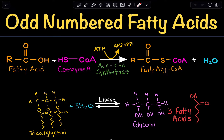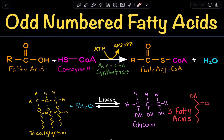Here we're going to go over odd-numbered fatty acid beta-oxidation. Beta-oxidation is the process in which we break down a fatty acid — essentially we oxidize our fatty acid to produce acetyl-CoA, which is going to go into the TCA cycle and further produce ATP through electron carriers such as NADH and FADH2.